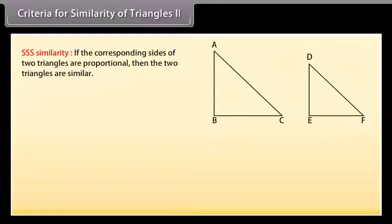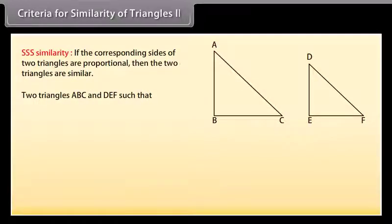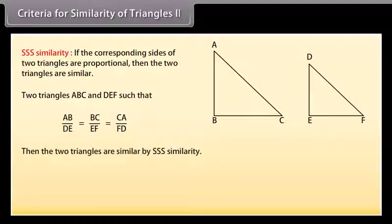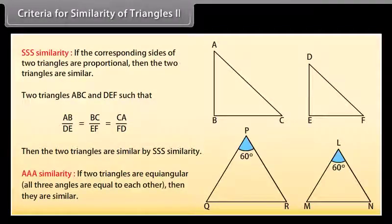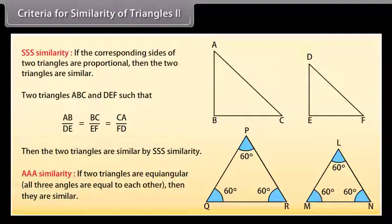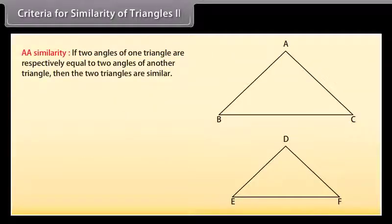Criteria for similarity of triangles — 2. SSS similarity: if the corresponding sides of two triangles are proportional, then the two triangles are similar. Two triangles ABC and DEF such that AB upon DE equals BC upon EF equals CA upon FD, then the two triangles are similar by SSS similarity. AAA similarity: if two triangles are equi-angular — all three angles are equal to each other — then they are similar. AA similarity: if two angles of one triangle are respectively equal to two angles of another triangle, then the two triangles are similar.